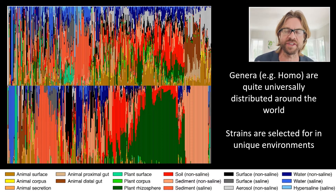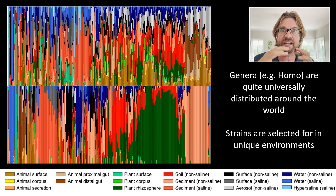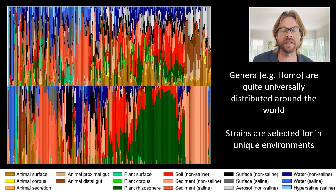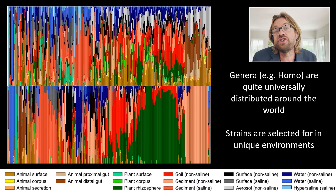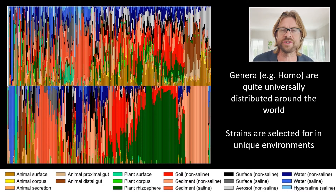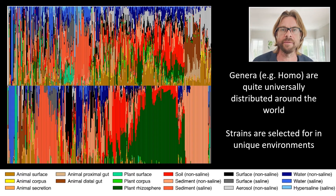But when we go down to the strain level, the subspecies level of assignment, we start to see significantly greater specificity of assignment. For example, this big green blob in the middle represents strains of bacteria nearly always found associated with the plant rhizosphere — in the root or on its surface — and predominantly also a little bit found in surrounding soils, but not really found anywhere else. So the genus category is a pretty broad category. Those bugs can be found in water, soils, and animals. But when we go down to the subspecies level, we see that refinement — the selection that Baas Becking was talking about.